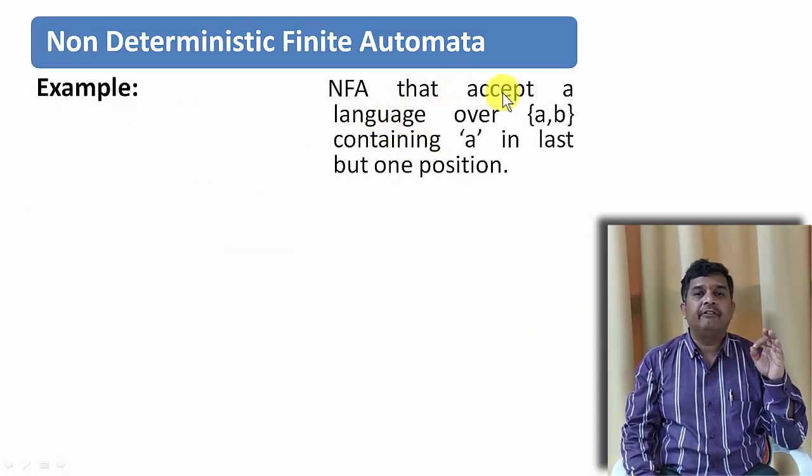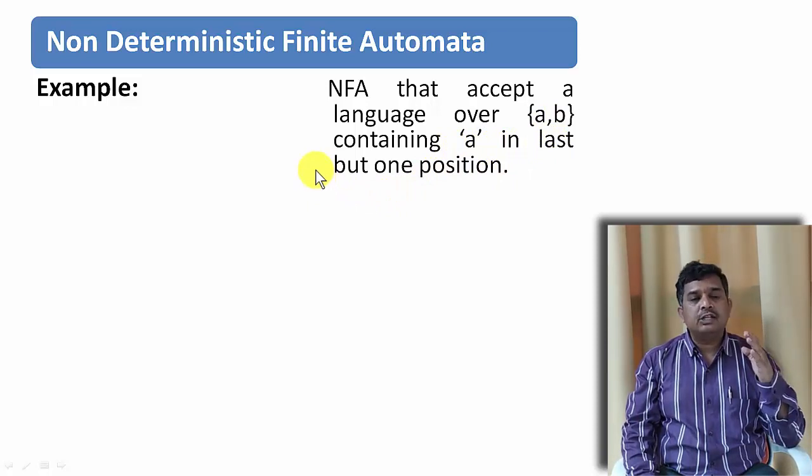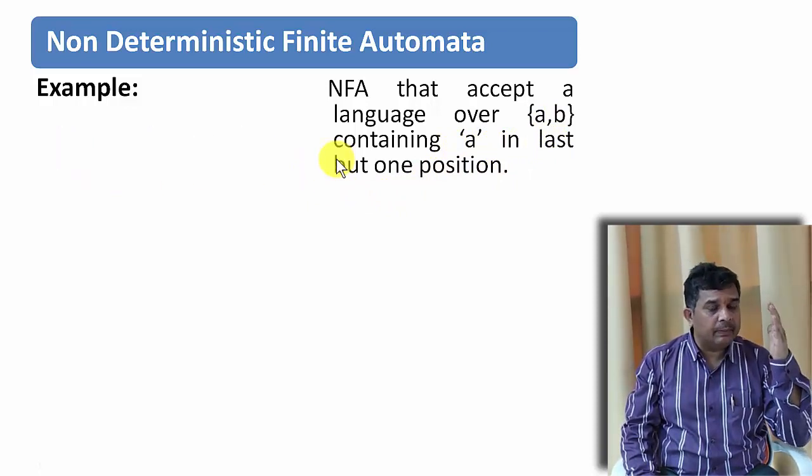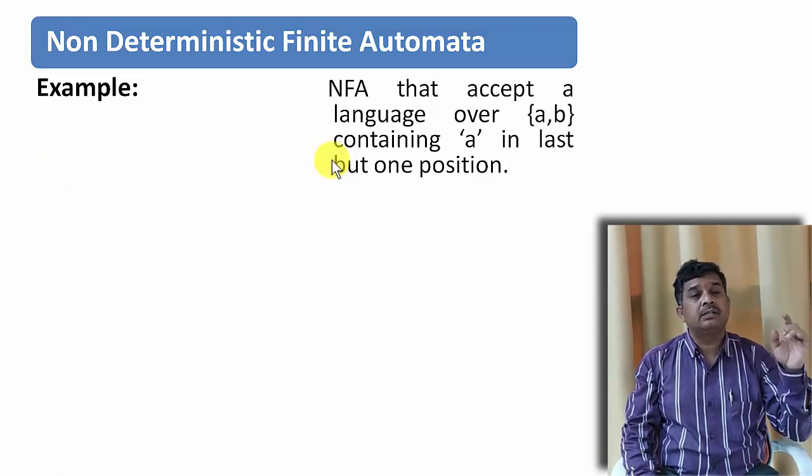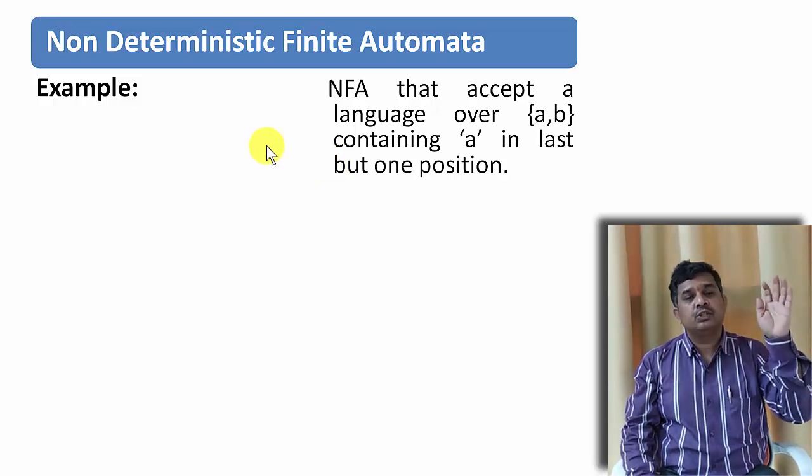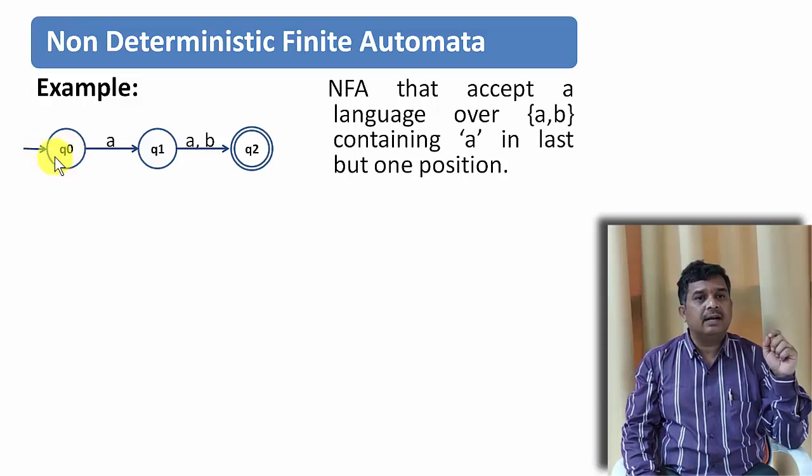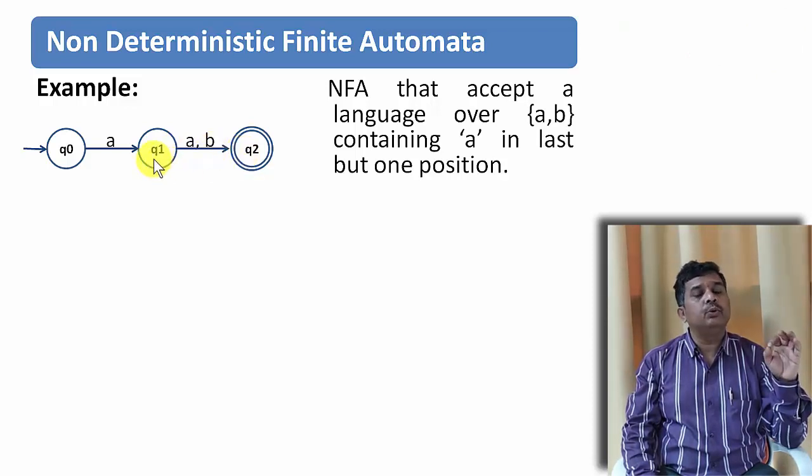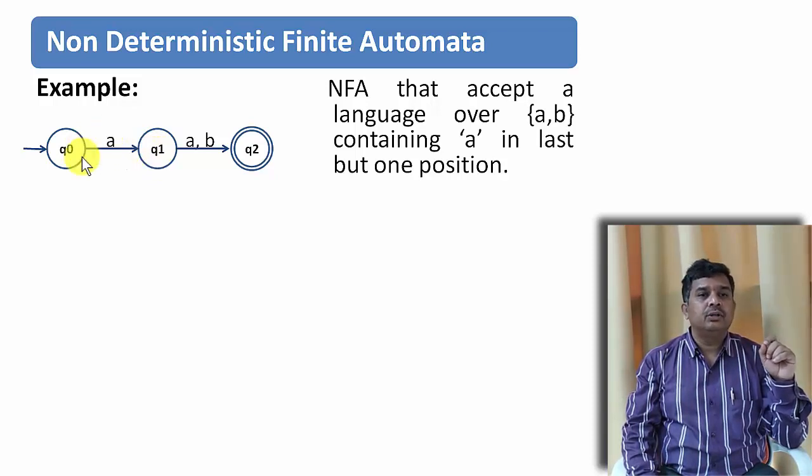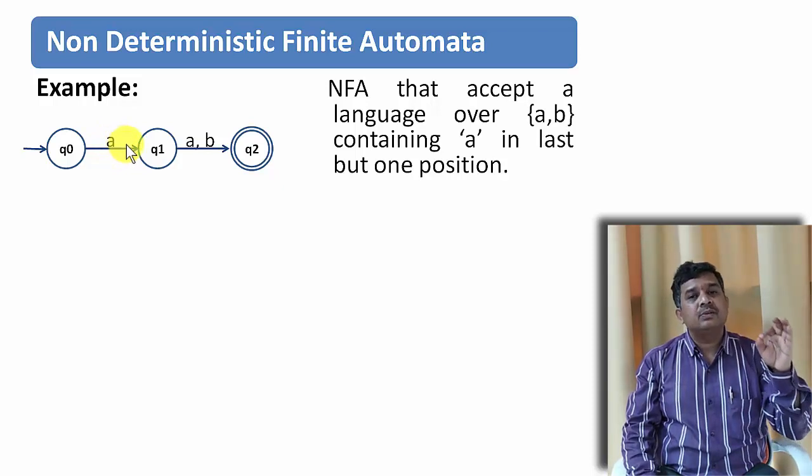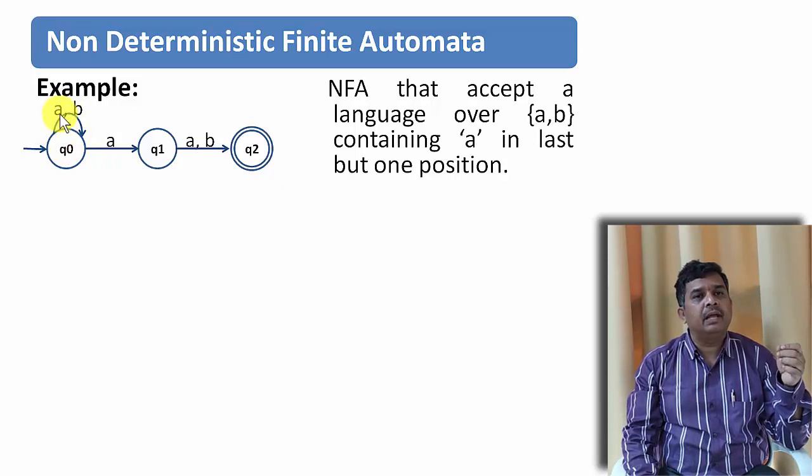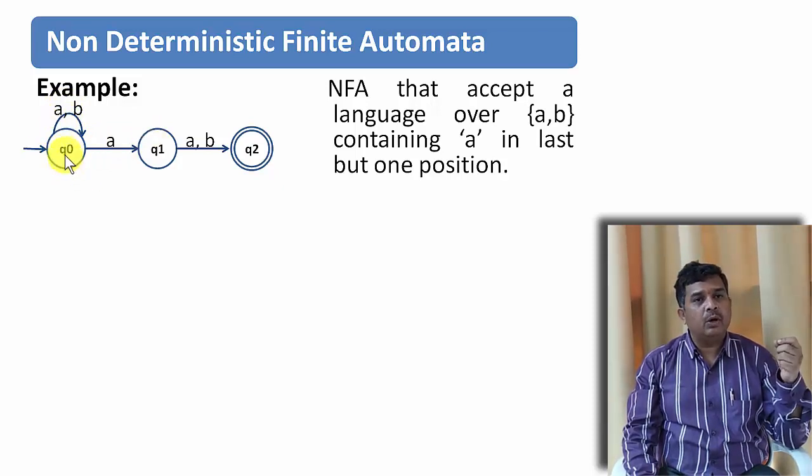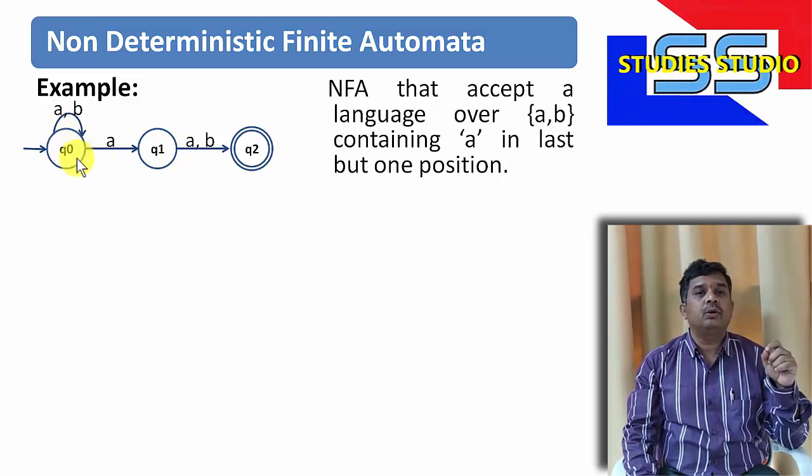Let us try to design a NFA. NFA that accepts a language over A and B that contains A in the last but one position. Last but one position means, before the final state, whatever state will be there, whatever input symbol coming to that particular state is last but one. So that particular transition should be on A. Look at this, Q0 is the starting state and Q2 is the final state. To come to Q2, you need A or B transition on Q1. And to reach Q1, you need A transition from Q0. So this A is nothing but last but one transition. And we don't bother if any number of A or B appear before this A. Now you can see on Q0, we are having A transition to Q0 as well as to Q1. B transition to Q0 only.